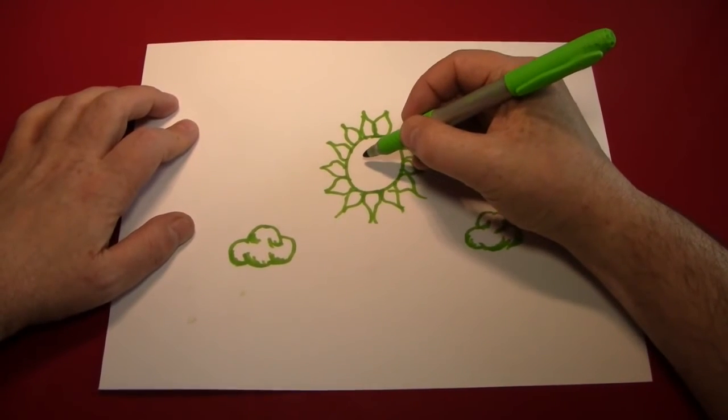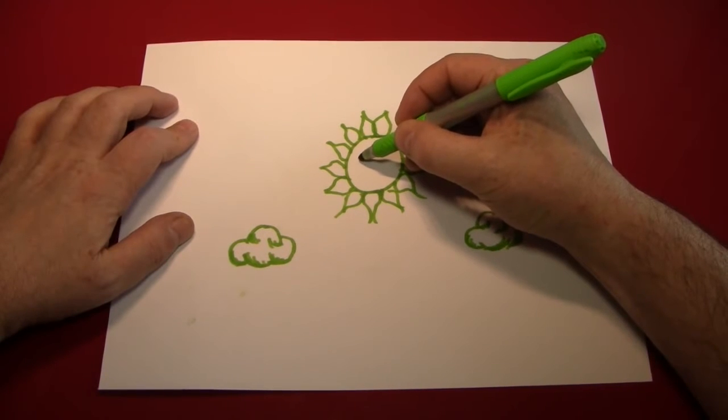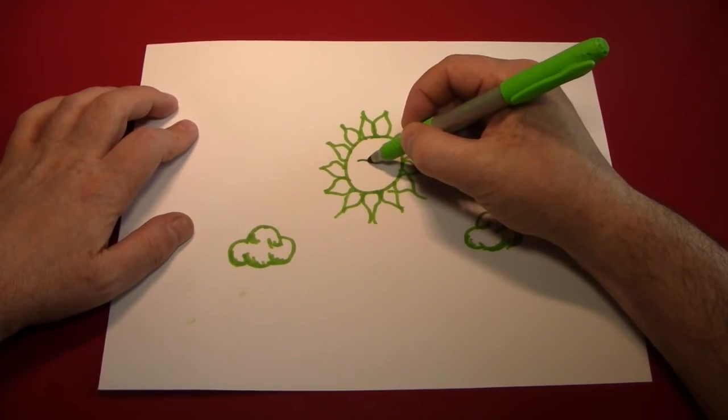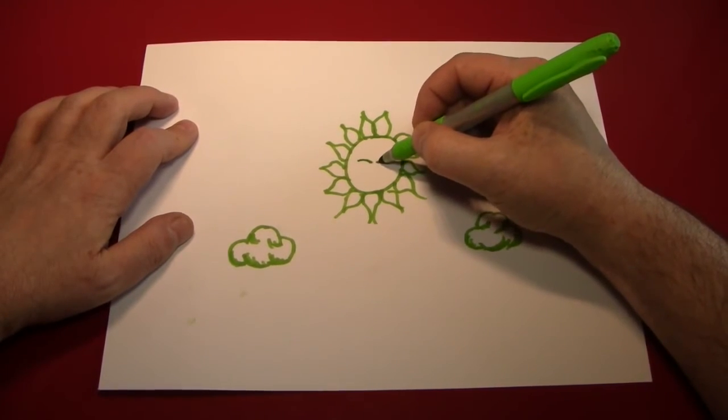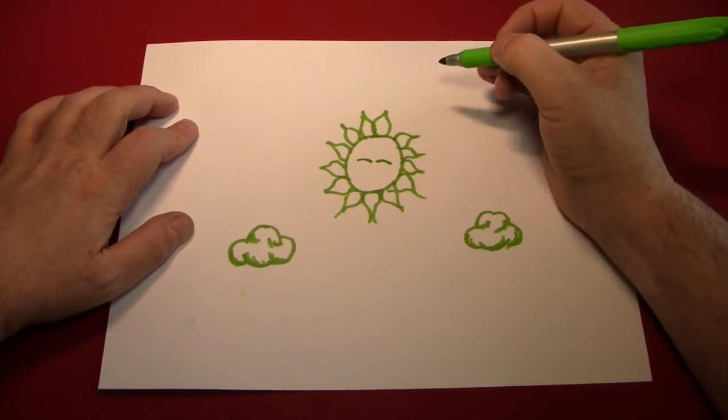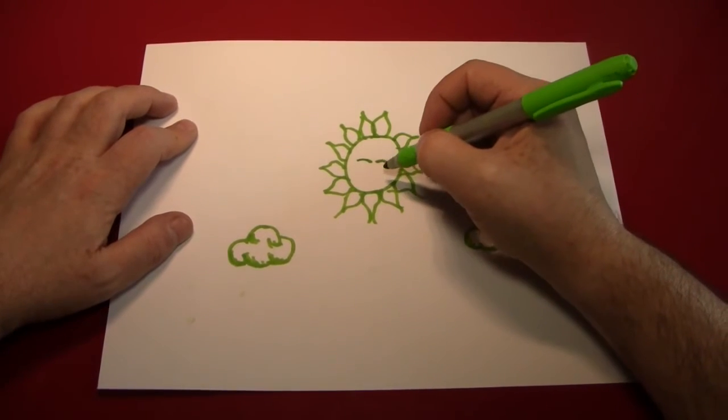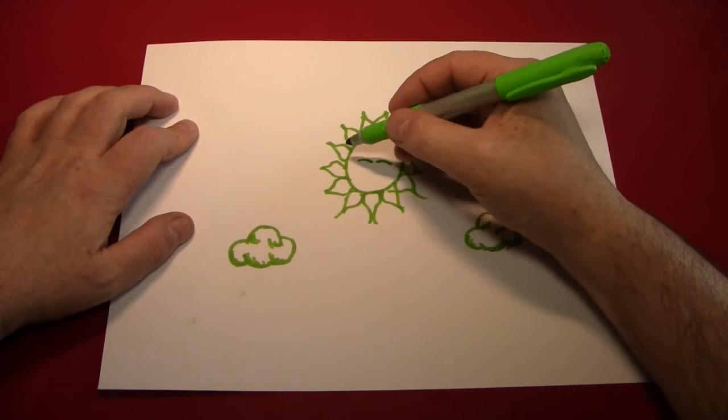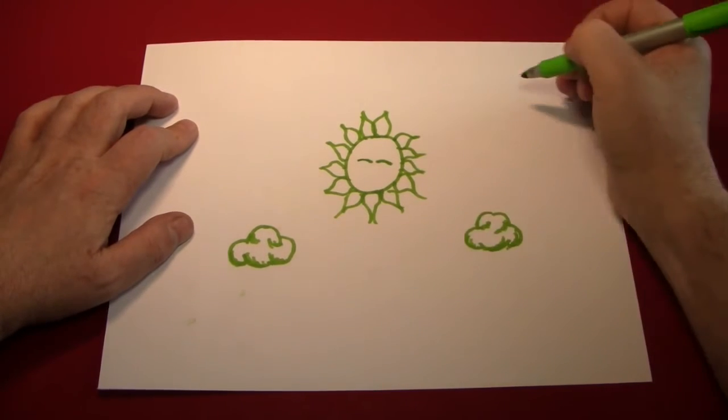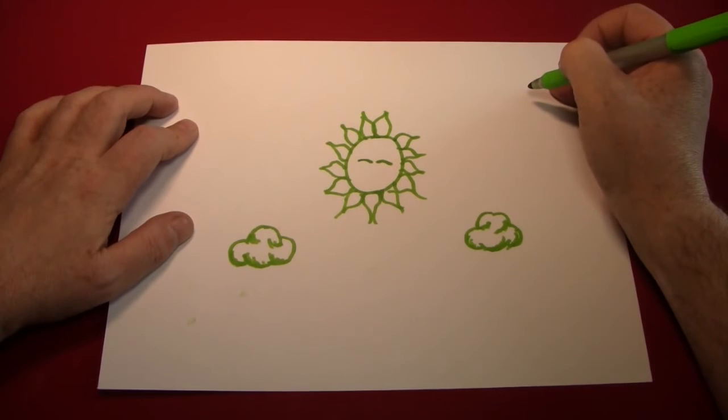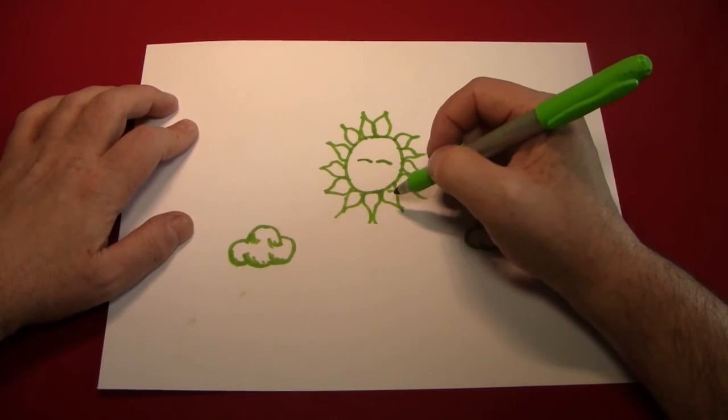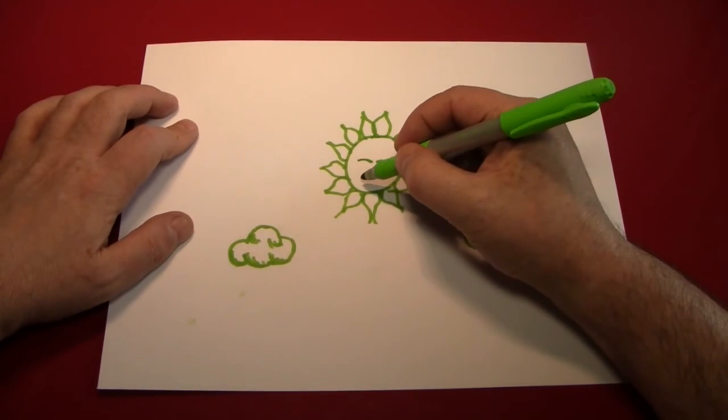We'll start by making kind of stylized curves. One there, and one there. And they're a little bit off of level. So I'm going to incorporate that into the personality of our sun, and make him kind of a sneering, grinning sun.